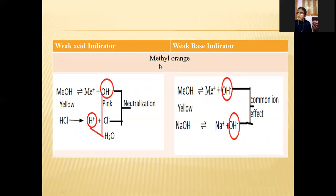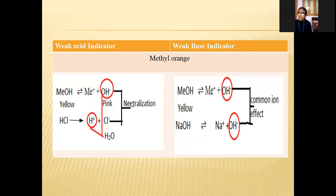The next example is methyl orange, which is a weak base indicator. When methyl orange is dissolved in a strong acid like hydrochloric acid, OH⁻ and H⁺ combine to form water, so neutralization occurs and the color changes from yellow to pink. When methyl orange is dissolved in a strong base, OH⁻ ions are common, forming the common ion effect, so there is no color change.